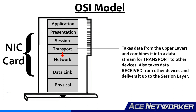Then you have the transport layer. This layer takes data from the upper layers — the session, the presentation, and the application layers — and combines it into a data stream for end-to-end transport between devices. The transport layer makes sure that data is transported from this device to the other and back correctly. It also takes data received from other devices and delivers it up to the session layer to go back up the hierarchy.